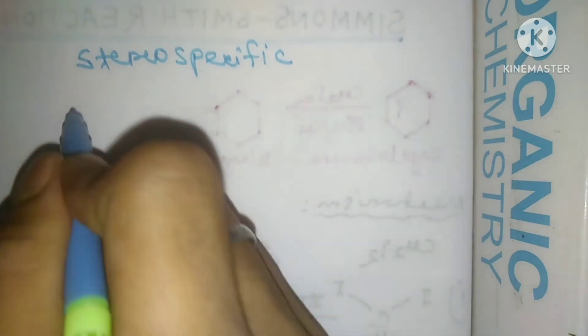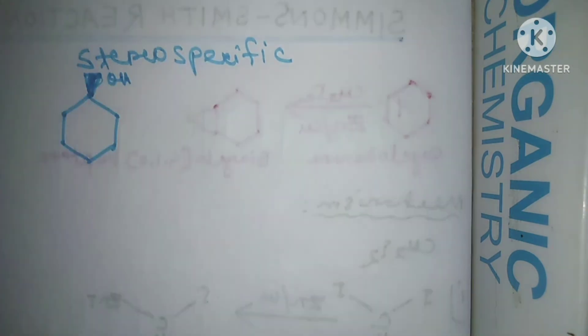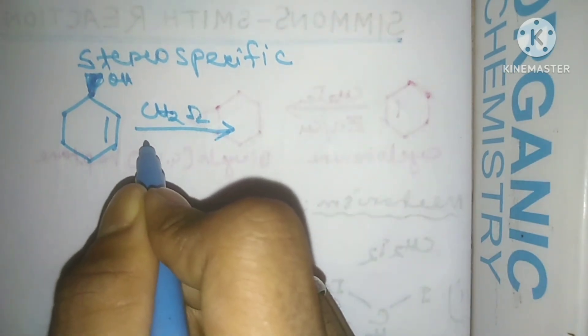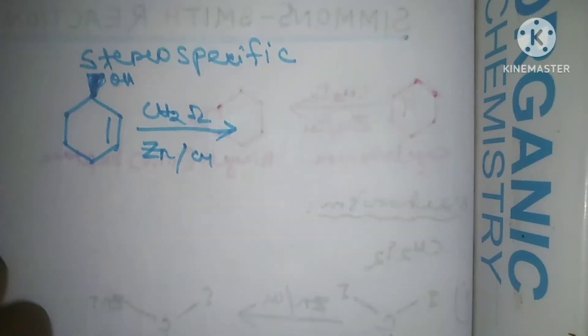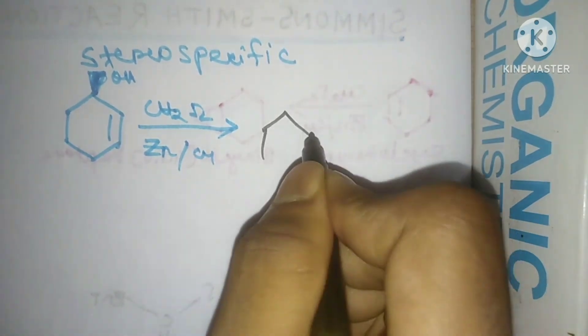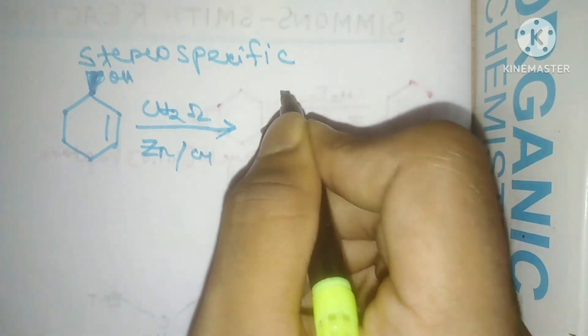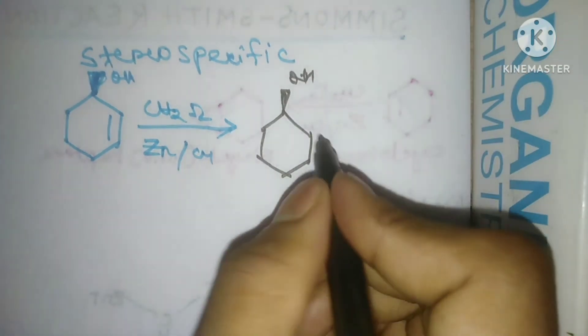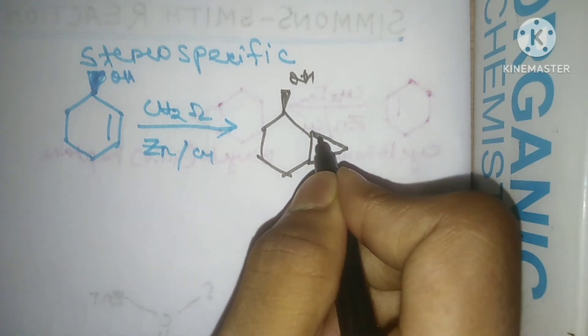First of all, this reaction is highly stereospecific. Let's take an example. Here, this OH group is above the plane, and we have a double bond. On reacting with Simmons-Smith reagent, it forms a product where the OH was above the plane and the cyclopropane will also be above the plane.